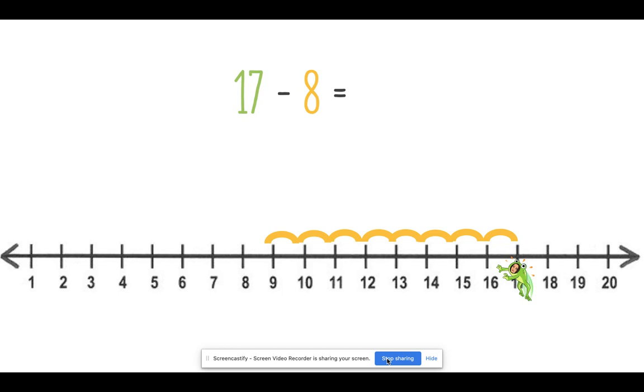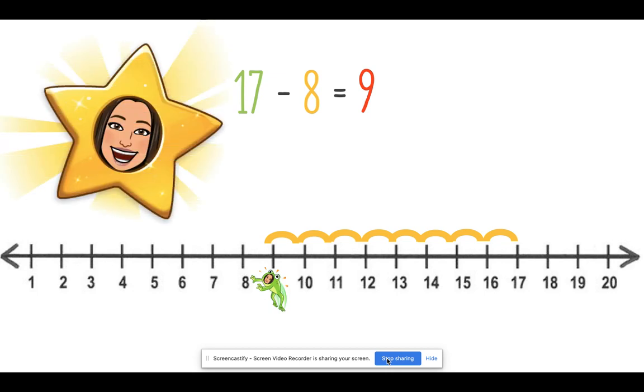Where is Ms. Vargas going to go? Let's see. 1, 2, 3, 4, 5, 6, 7, 8. Where did Ms. Vargas stop? She stopped at the number 9. Because 17 minus 8 equals 9. Good job.